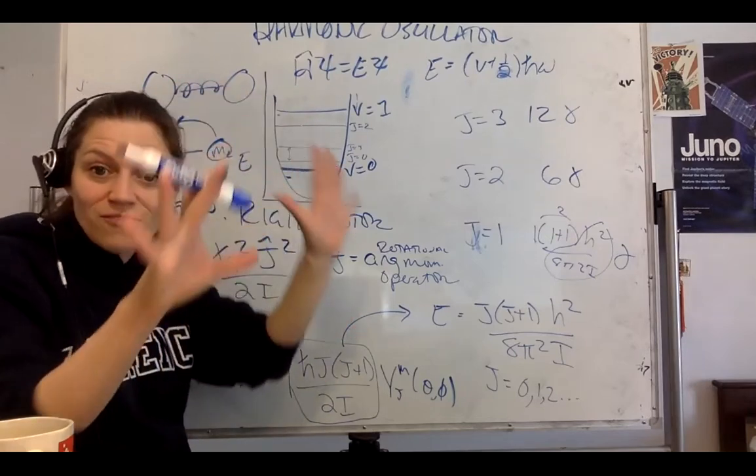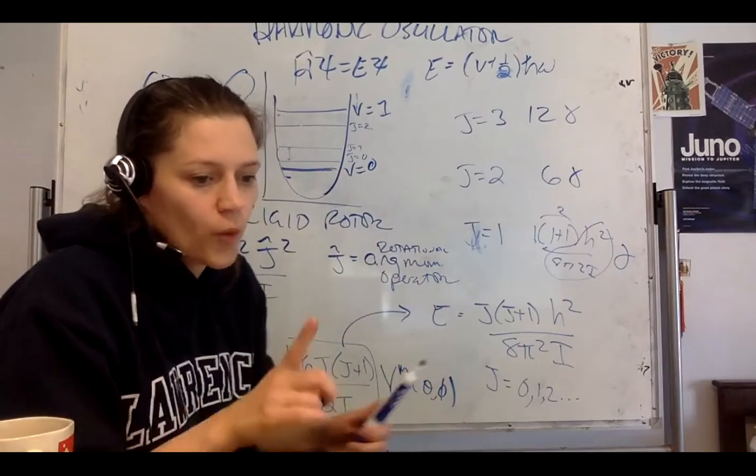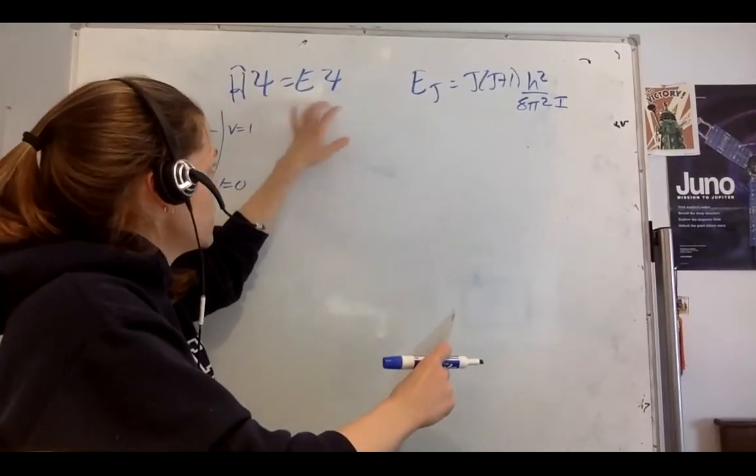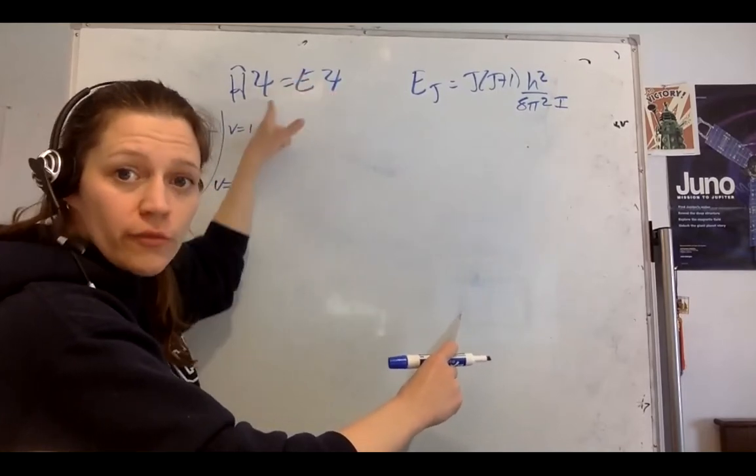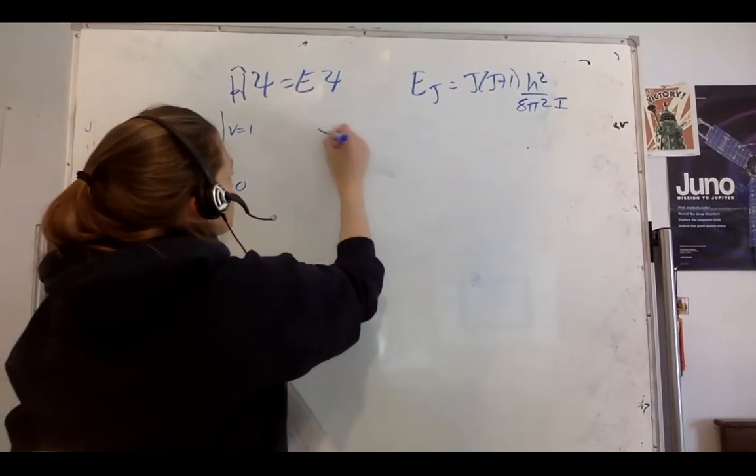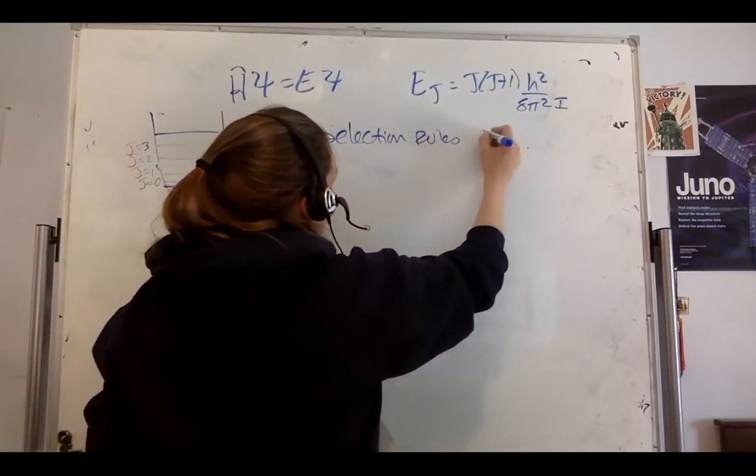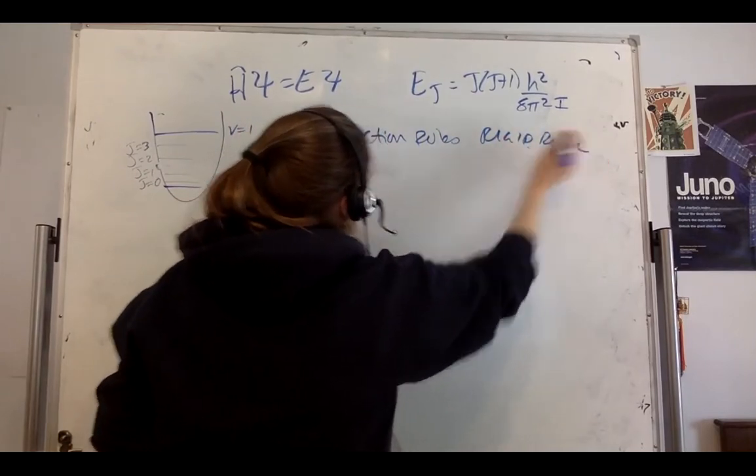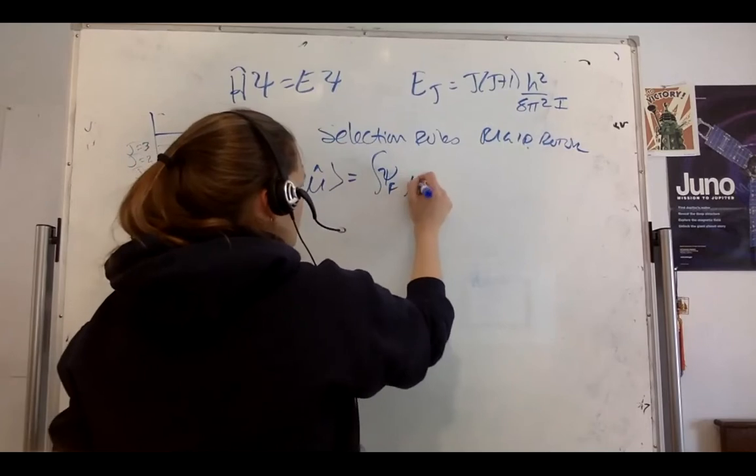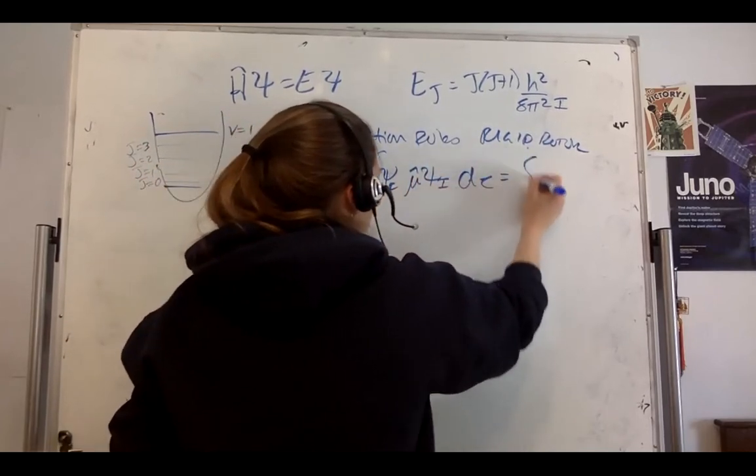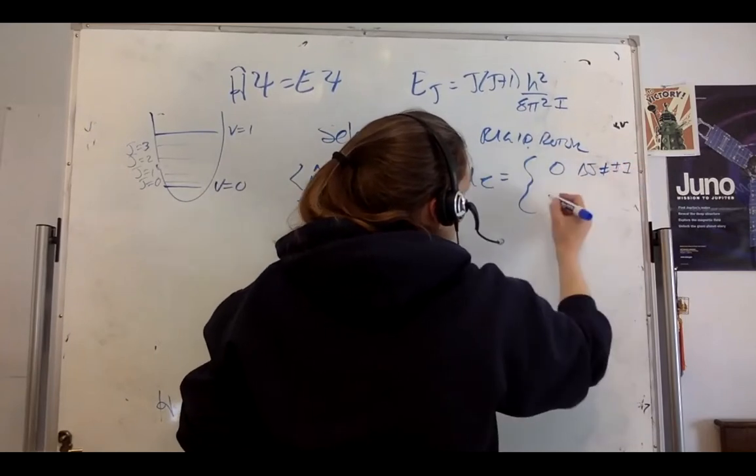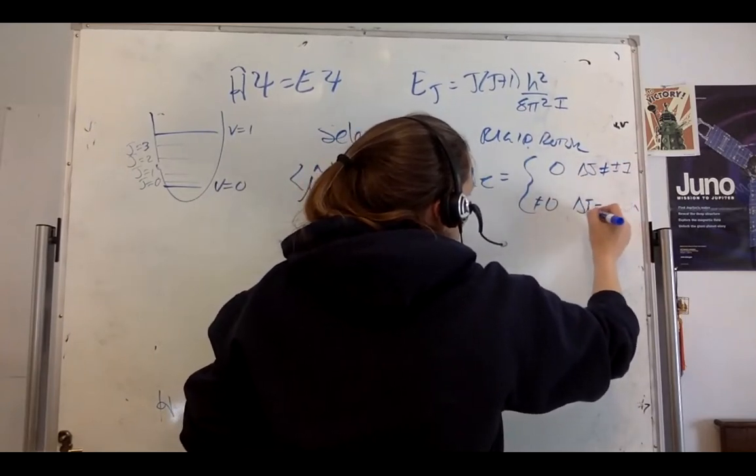We've got H·ψ = E·ψ, a very specific wave function for a rigid rotor, and an energy j(j+1)ℏ²/8π²I. The selection rules for the rigid rotor come from the idea that you have a transition dipole moment. The integral of ψ_final (transition dipole moment operator) ψ_initial dτ equals 0 for Δj not equal to ±1, and equals not 0 for Δj equal to ±1.